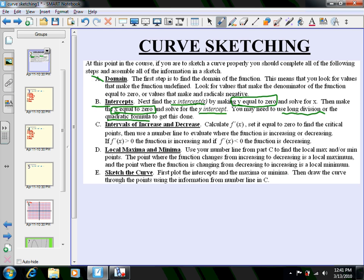Once we're done with intercepts, we know some points the graph goes through. Now we need to know when is it going up and when is it going down, or what are the intervals of increase and decrease. The way you get that, we'll calculate the derivative f', set it equal to zero, and find the critical points.